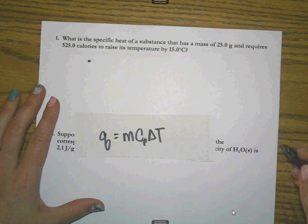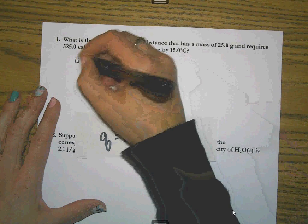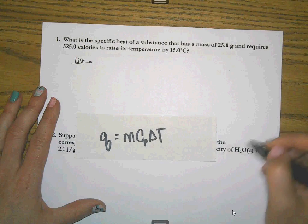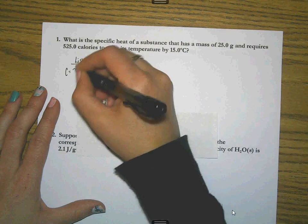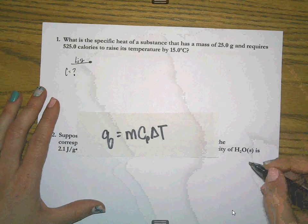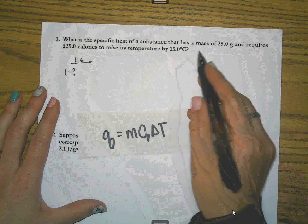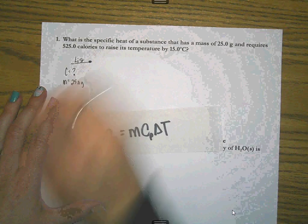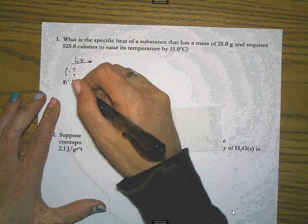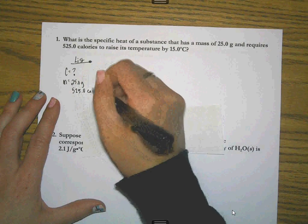My first recommendation is always going to be that you make a list. So if I go through my numbers, it says, what is the specific heat? So I know already they want me to find C. And it says it has a mass, that's M, of 25.0 grams.